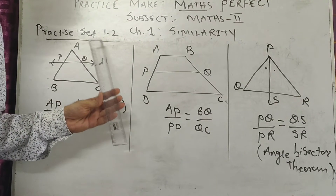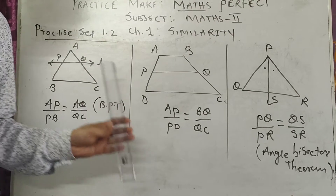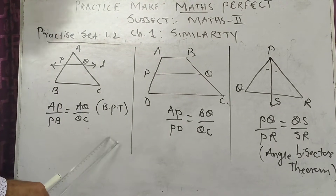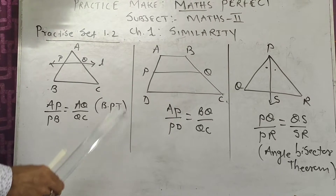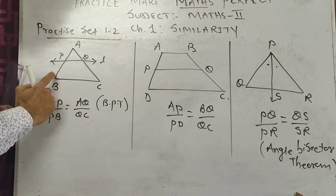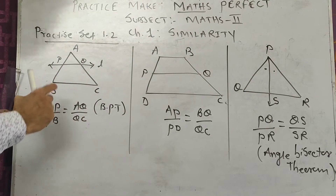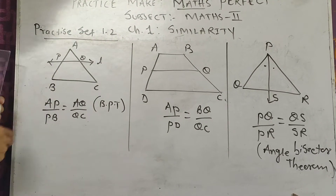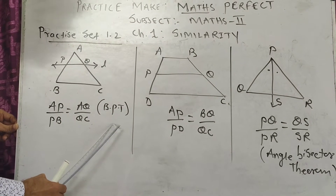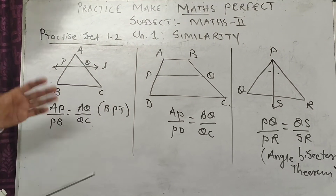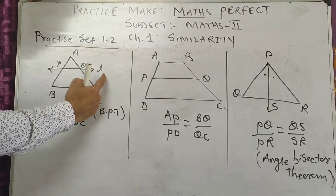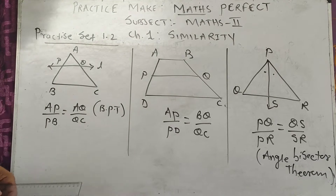Before starting exercise 1.2, let us review the basic concepts related to this exercise. Your first concept is BPT — Basic Proportionality Theorem. In BPT, a line is parallel to one side and intersects the other two sides at points P and Q, giving you the ratio: AP upon PB is equal to AQ upon QC. This is called BPT. Now, the converse of BPT: when these two ratios are equal, that means line L is parallel to side BC. This is called converse of BPT.